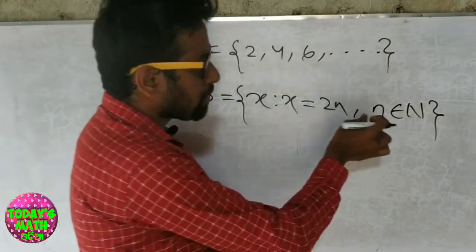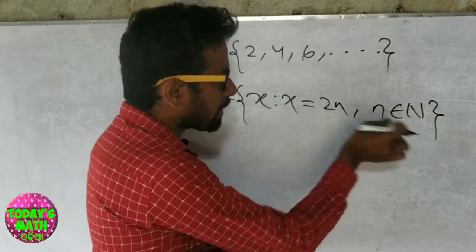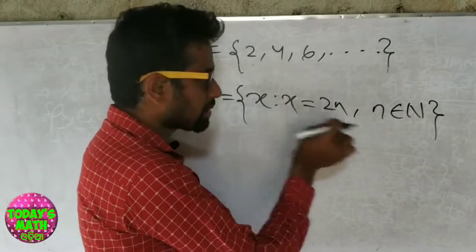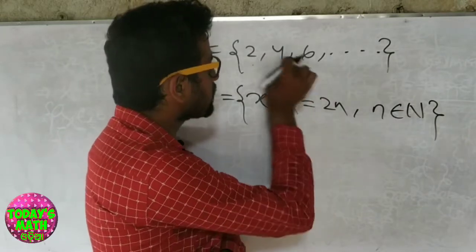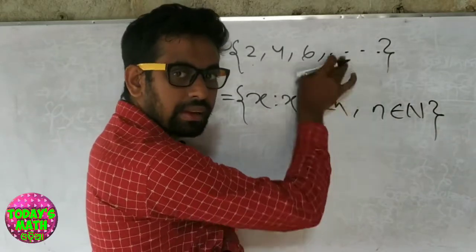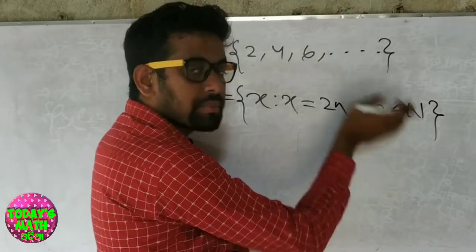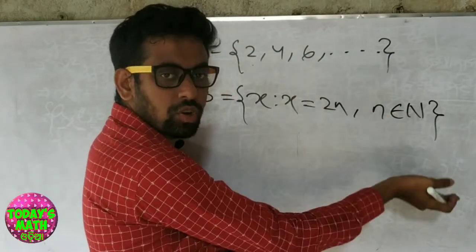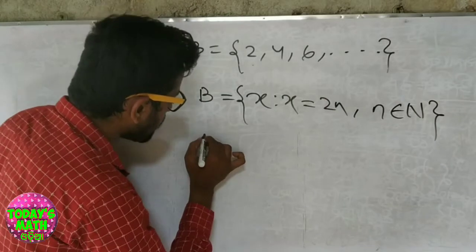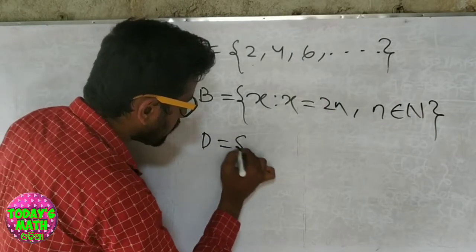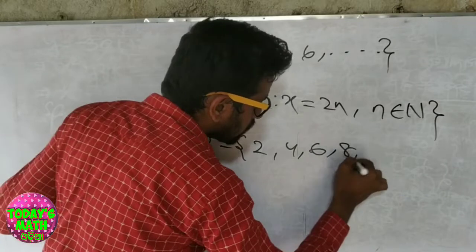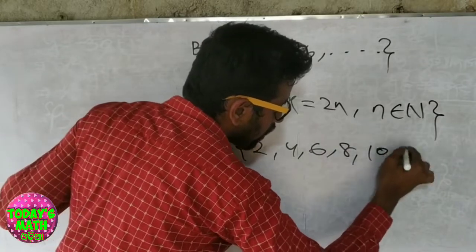So we have n = 1 gives 2, n = 2 gives 4, n = 3 gives 6, n = 4 gives 8. We have to specify the mapping: 2, 4, 6, 8, continuing. So we specify 2, 4, 8 with the pattern x = 2n.